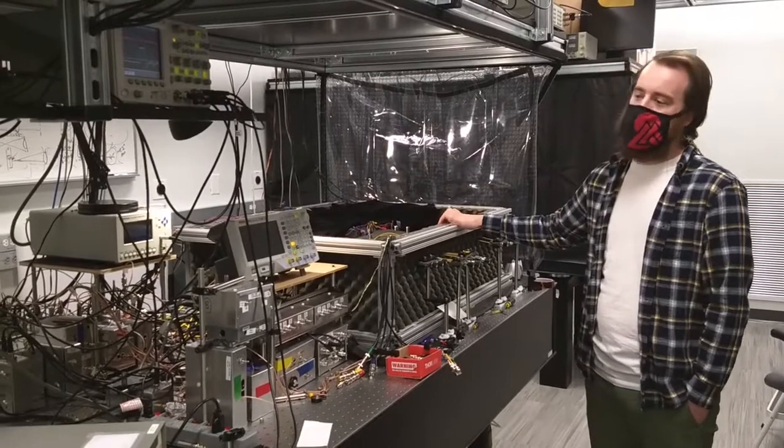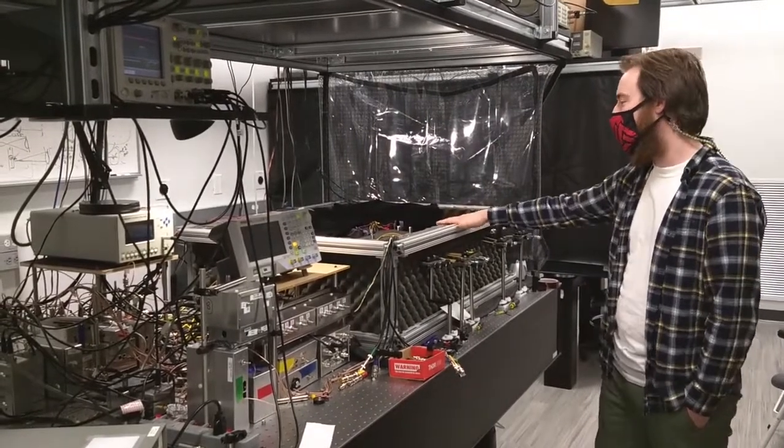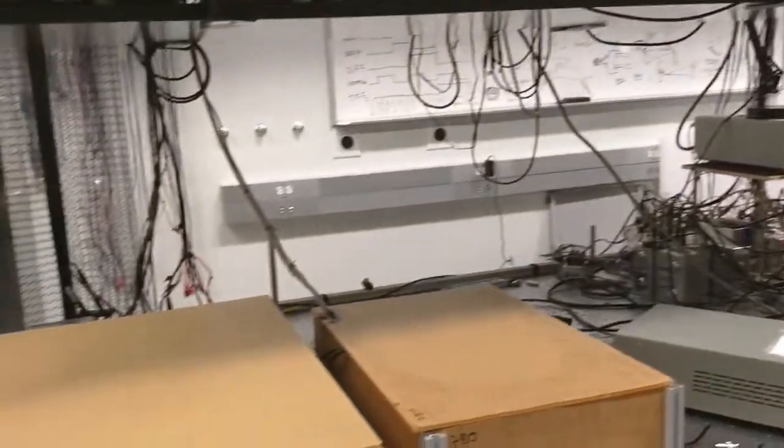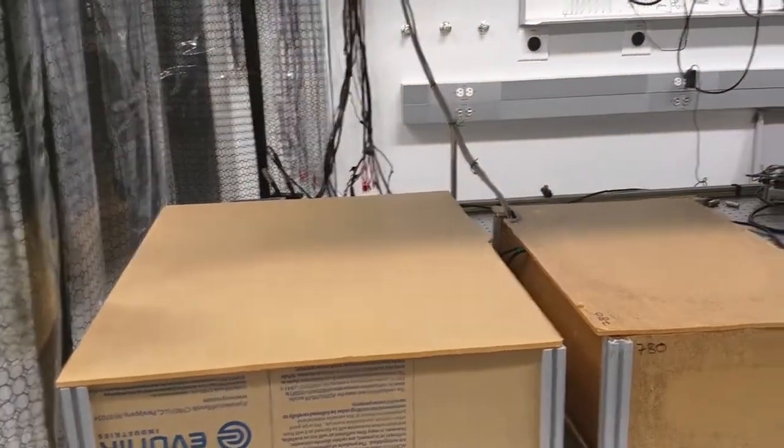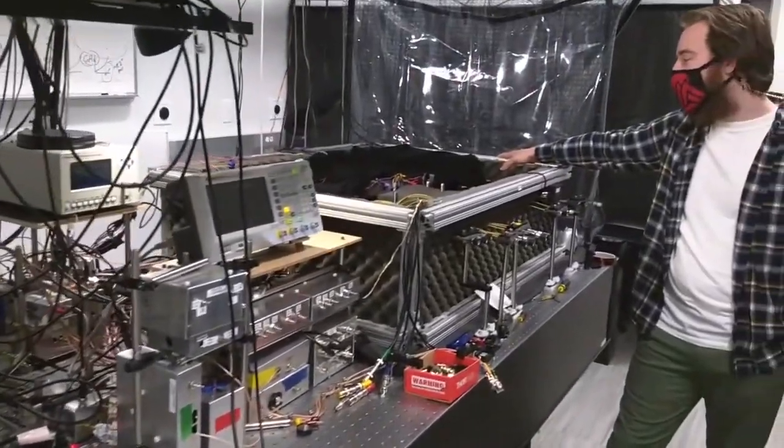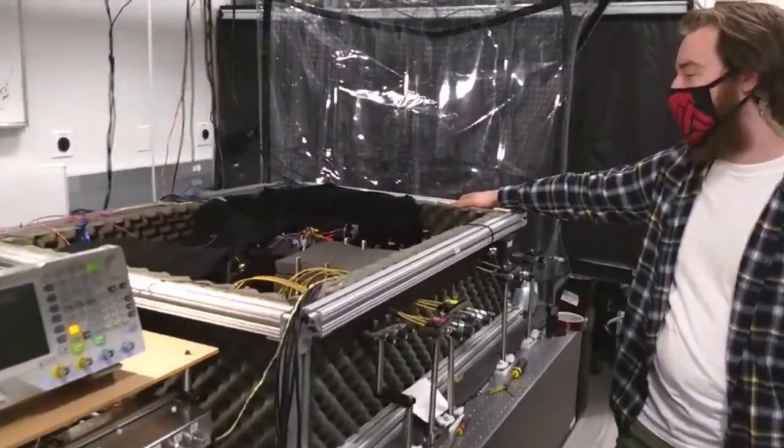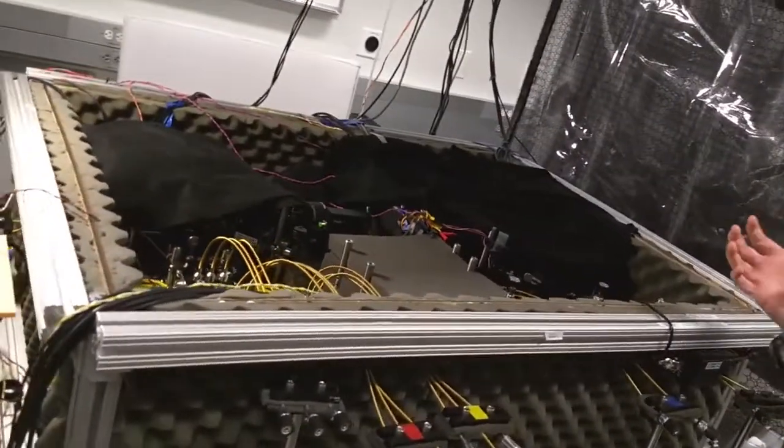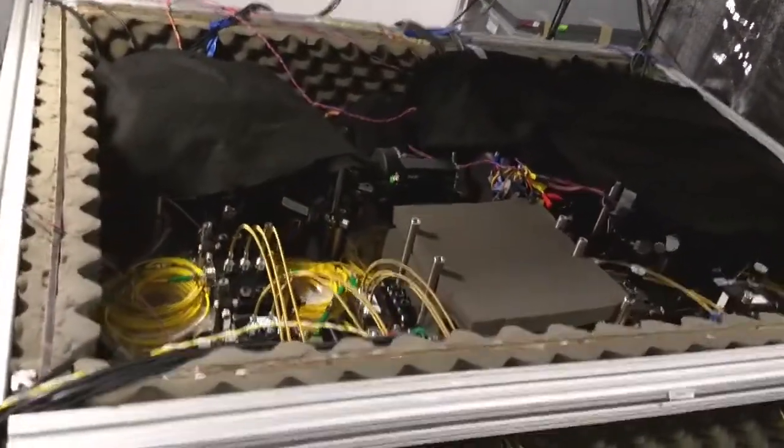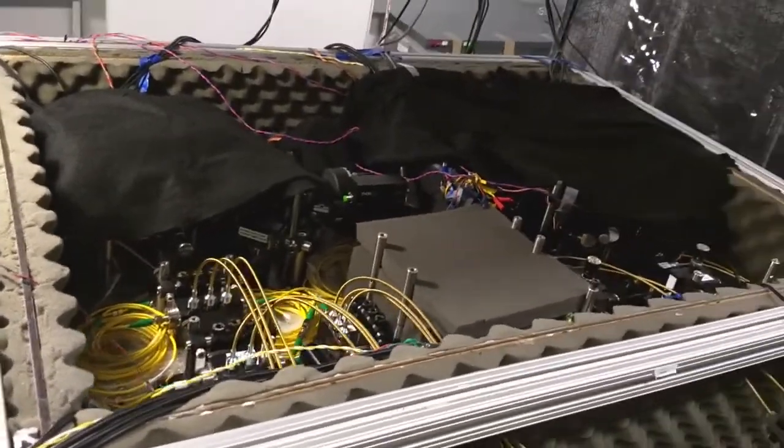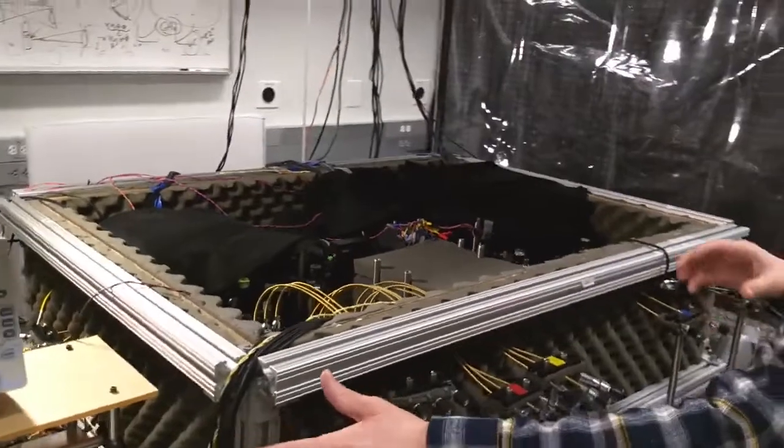The way we do these kinds of measurements is we start off with a laser over in that corner of the table and then that goes through some fibers and comes into this box which is really where all of the nuts and bolts of the experiment are. So what we do is we take this laser light and we split it in two and then we can manipulate these two fields of light by changing their amplitude or phase using all of these electronics over here.